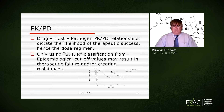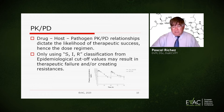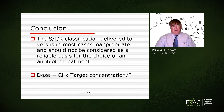We need to have the drug-host-pathogen relationship to obtain the likelihood of therapeutic success and therefore the dose regime. For a clinician, using only the susceptible-intermediate-resistant classification may result in therapeutic failure or creating resistance too. My last conclusion: a susceptible-resistant classification delivered to the vet is in most cases inappropriate and should not be considered as a reliable basis for the choice of an antibiotic treatment.